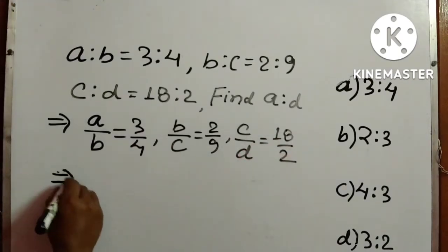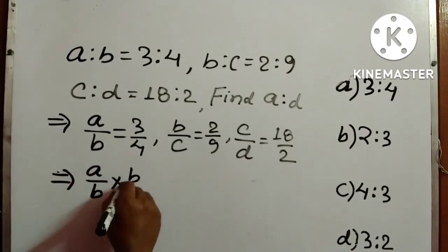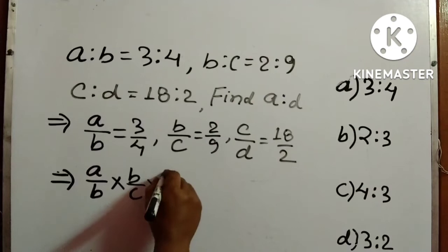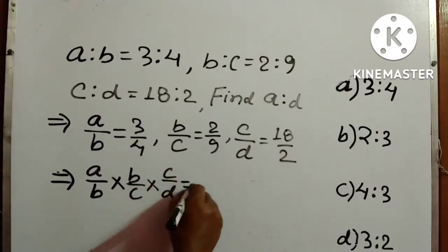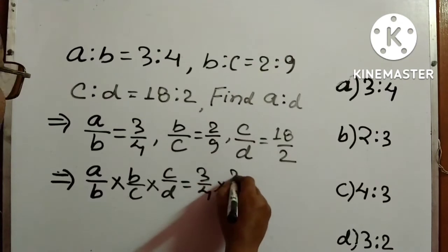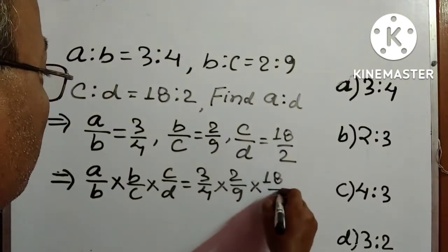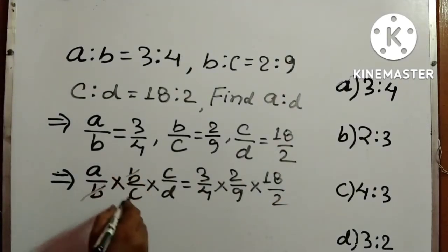We will write like this: A by B times B by C times C by D. Accordingly, 3 by 4 times 2 by 9 times 18 by 2. Now cancel B—B gets cancelled—and C gets cancelled.